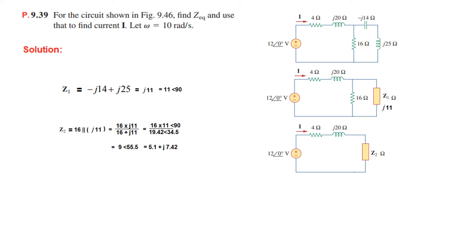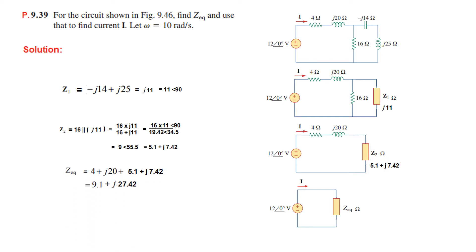From the circuit, the total impedance is the sum of all three components. Z equivalent is the summation: 4 plus j20, plus Z2 (5.1 plus j7.42), giving Z equivalent equal to 9.1 plus j27.42.